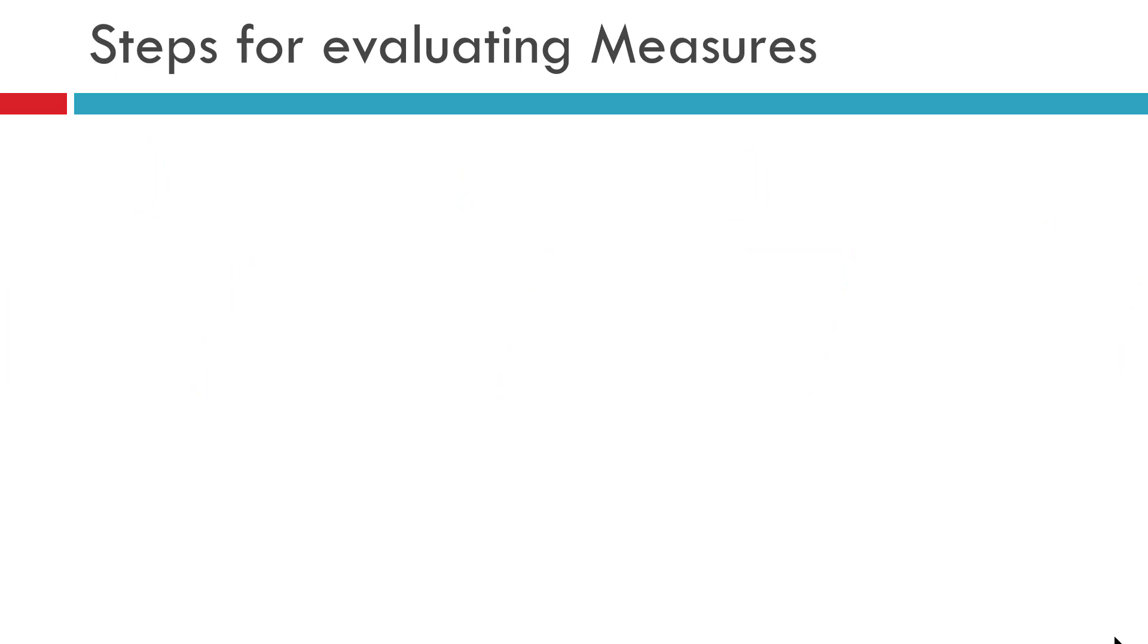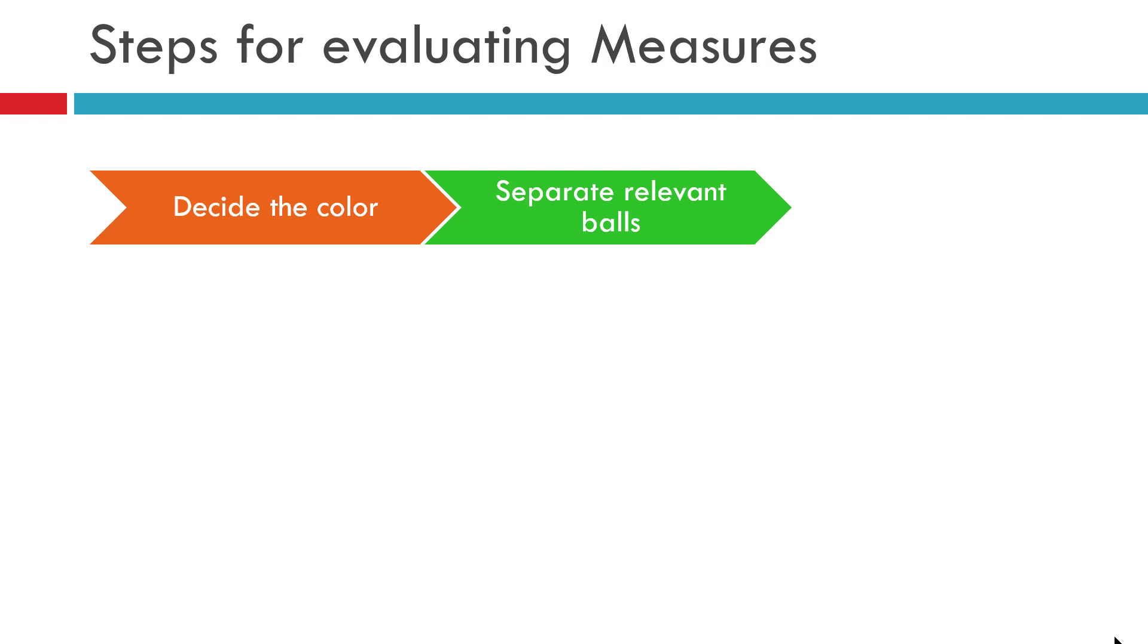I hope you have found these steps very obvious and intuitive. It's just a three-step process. First, decide the color which you want to count. Second, separate the relevant balls, and finally count them. Now, the calculation which happens for DAX measures in the background applies similar steps to come up with the results.